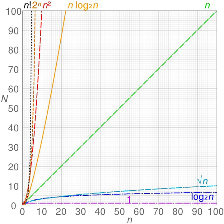Comparison sorts require at least O(n log n) comparisons in the worst case because log(n!) = Θ(n log n) by Stirling's approximation. They also frequently arise from the recurrence relation T(n) = 2T(n/2) + n. An algorithm is said to be sub-quadratic time if T(n) = O(n^2). Simple comparison-based sorting algorithms are quadratic, but more advanced algorithms can be found that are sub-quadratic. No general-purpose sorts run in linear time, but the change from quadratic to sub-quadratic is of great practical importance.